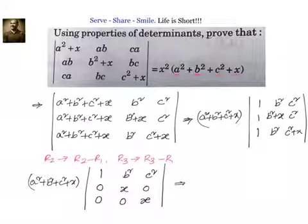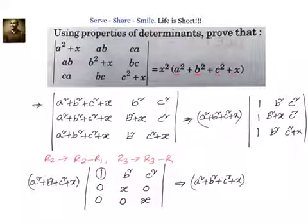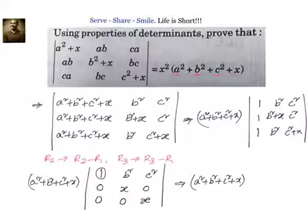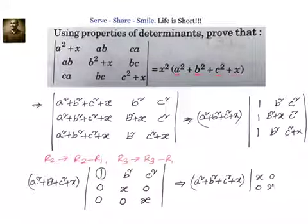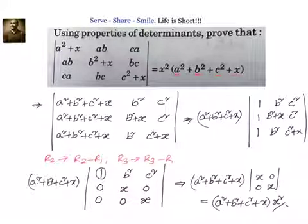Now we expand along the first column, where the only non-zero element is 1. We write down a squared plus b squared plus c squared plus x, and calculate the determinant of the remaining 2 by 2 matrix, which is x, 0, 0, x. That equals x squared. So the result is a squared plus b squared plus c squared plus x, multiplied by x squared — which completes the proof.